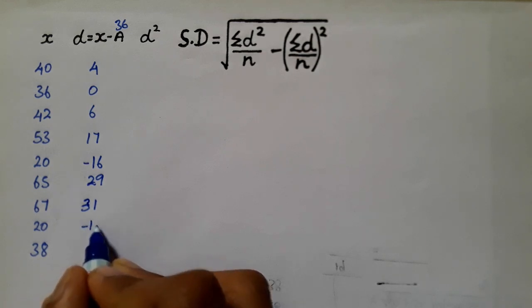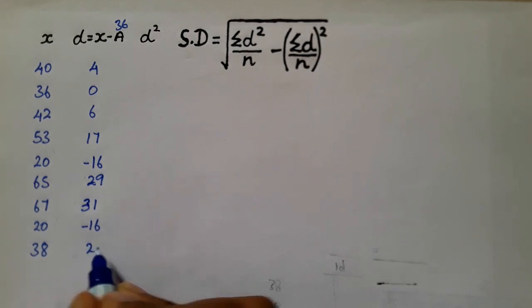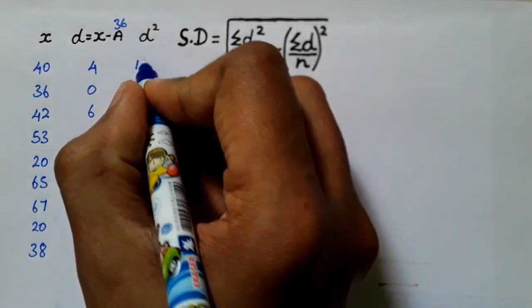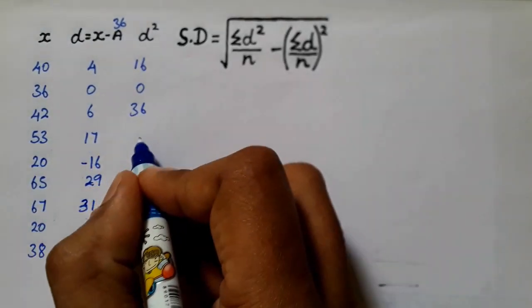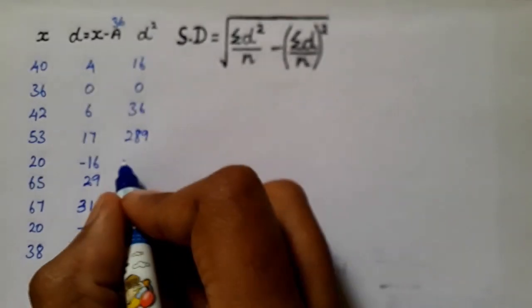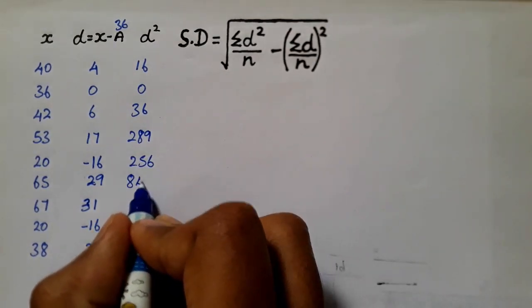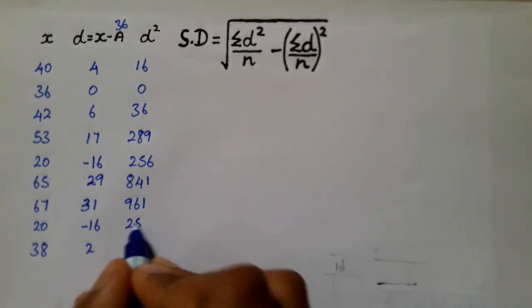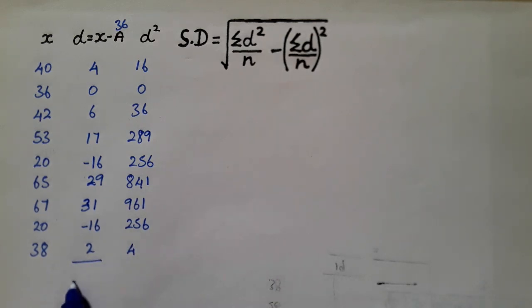Continuing the d values: 53 minus 36 equals 17, 20 minus 36 equals minus 16, 65 minus 36 equals 29, 67 minus 36 equals 31, 38 minus 36 equals 2. The d squared values are: 4 squared equals 16, 0 squared equals 0, 6 squared equals 36, 17 squared equals 289, minus 16 squared equals 256, 29 squared equals 841, 31 squared equals 961, 16 squared equals 256, 2 squared equals 4.